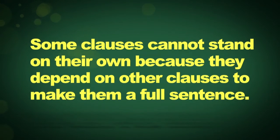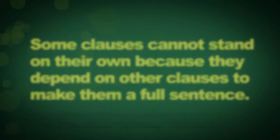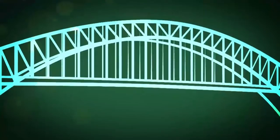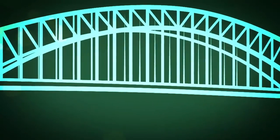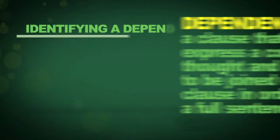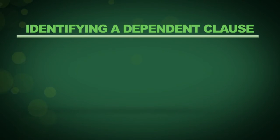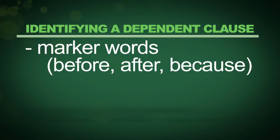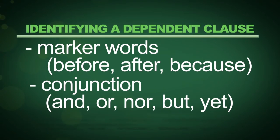Some clauses cannot stand on their own because they depend on other clauses to make them a full sentence. Think of it like a bridge without strong supporting pillars — it can't exist on its own. These types of clauses are dependent. A dependent clause does not express a complete thought and therefore needs to be joined with another clause to make a sentence. One easy way to identify a dependent clause is to look for marker words such as 'before' or 'after,' or a common conjunction like 'and' or 'but.' Clauses that use these words are oftentimes partial thoughts and are therefore dependent.